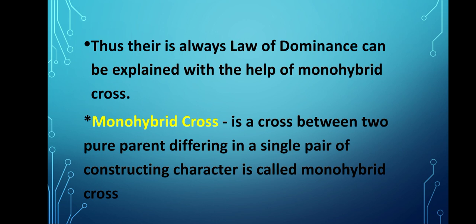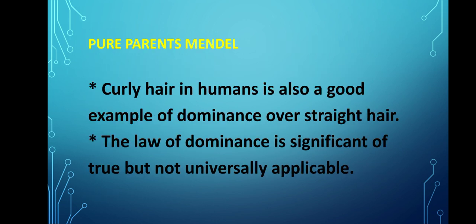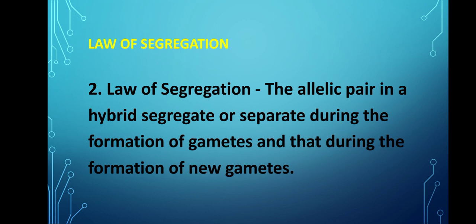A monohybrid cross is a cross between two pure parents differing in a single pair of contrasting characters. Curly hair in humans is also a good example of dominance over straight hair. The Law of Dominance is significant but not universally applicable.